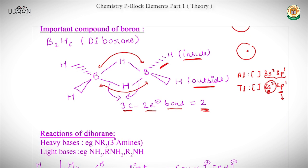It is called a 3-center 2-electron bond because there are 3 centers — the 1st, 2nd, and 3rd atoms — and 2 electrons move between these three centers. That is why it is called a 3-center 2-electron bond.